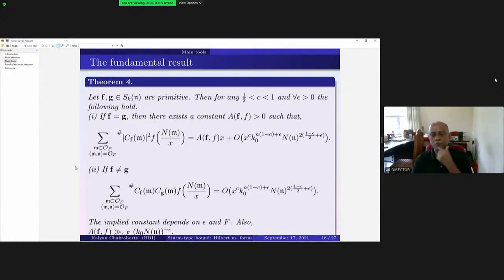So this is the fundamental result to prove the theorem that I was stating. F and g are primitive, and then for any c between half and one, for every epsilon bigger than zero, the following holds: we want to show how many such square-free coefficients you have to check so that the form is non-zero.